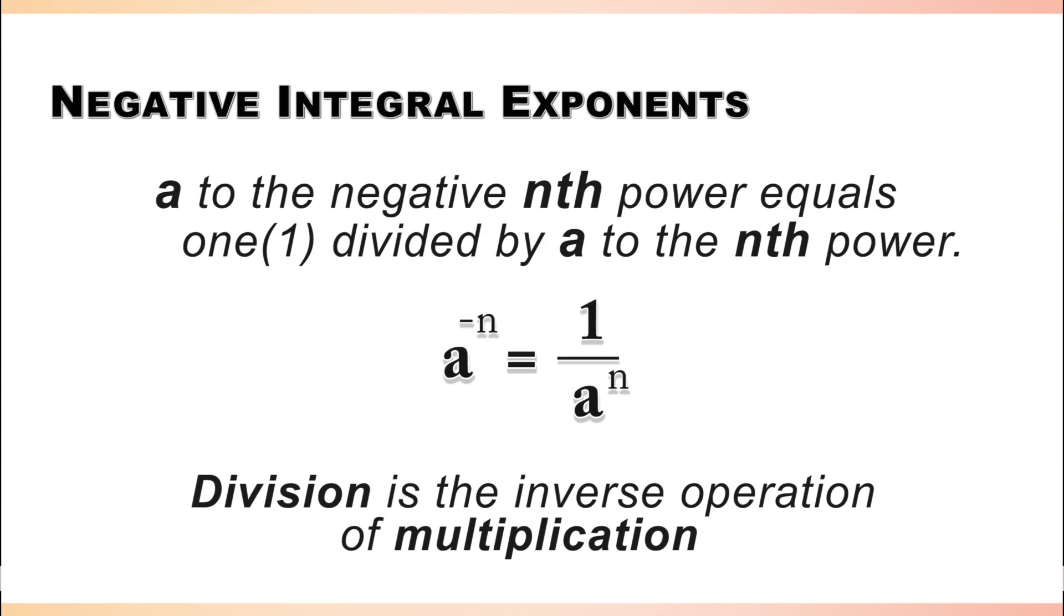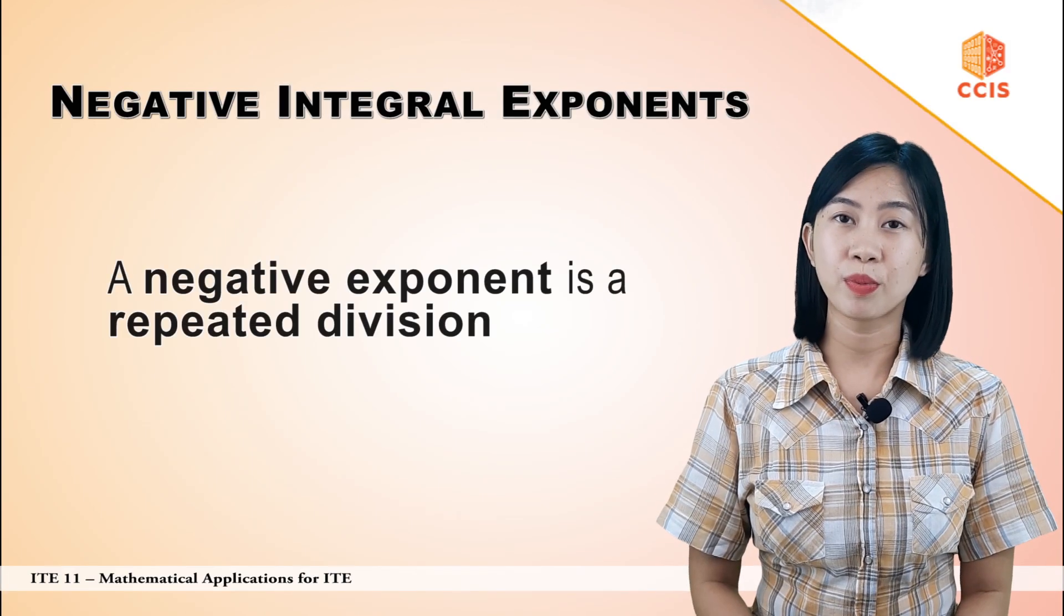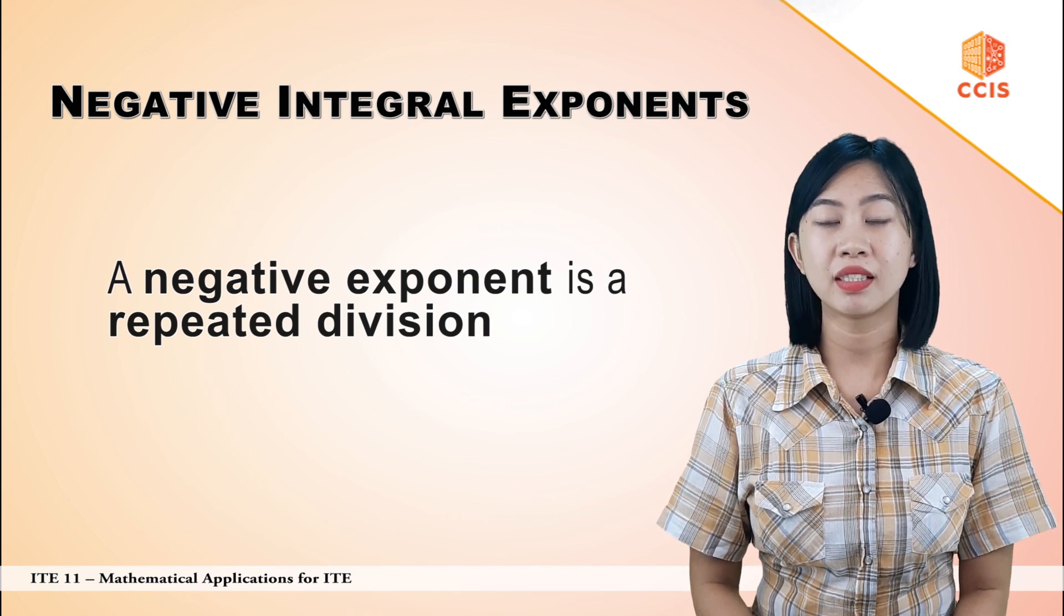And division is the inverse operation of multiplication. So a negative exponent is basically repeated division.